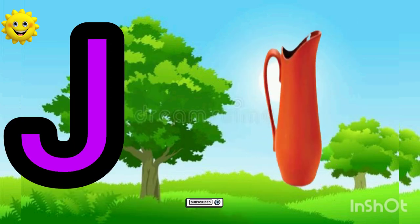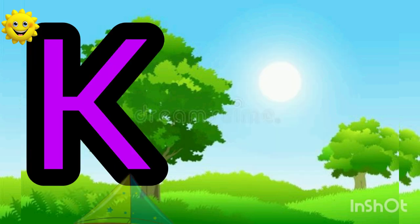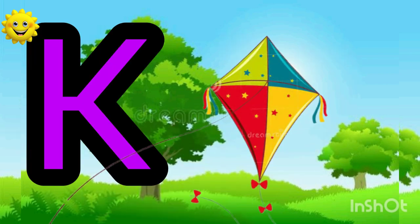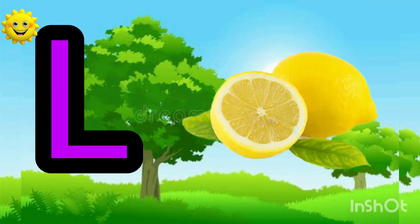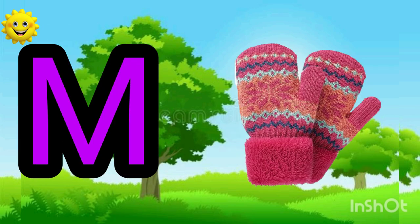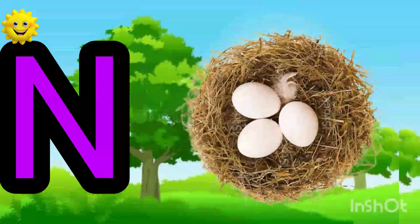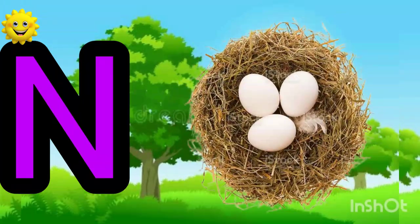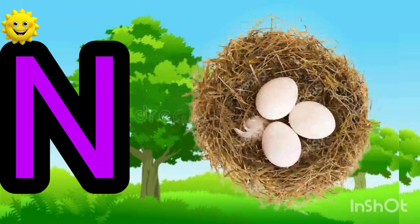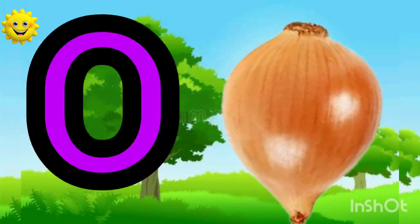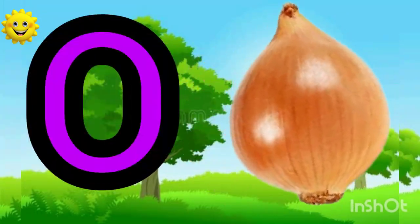J for jug, K for kite, and L for lemon, M for maiden, N for nest, O for onion.